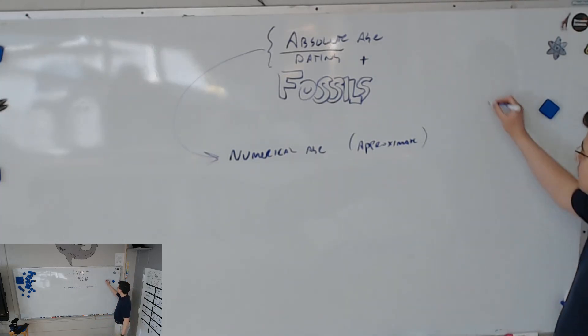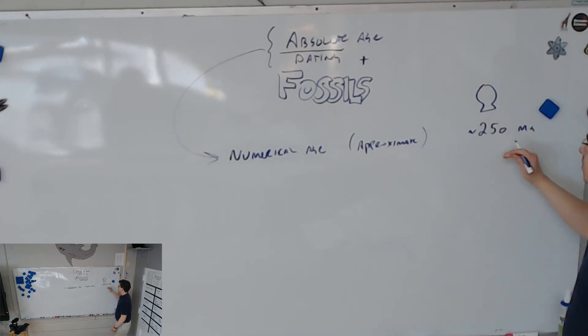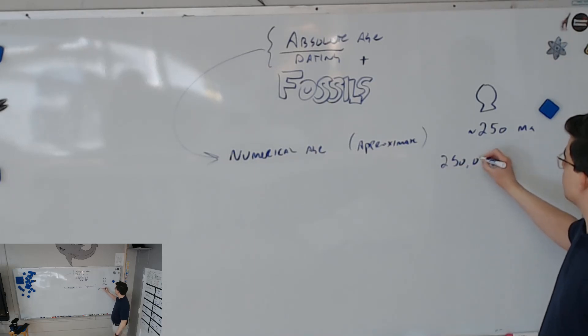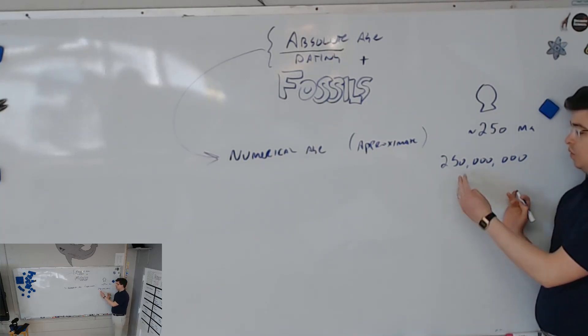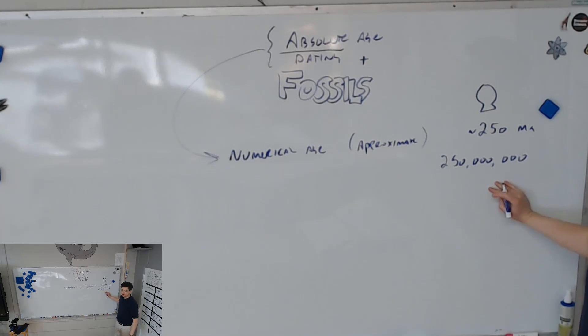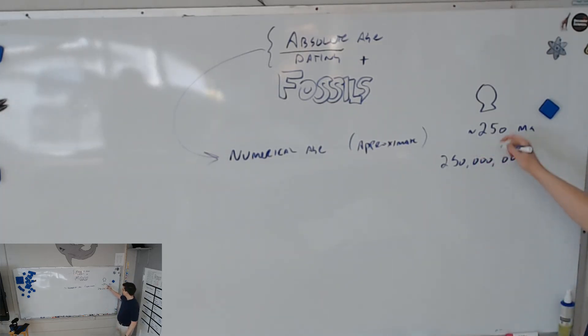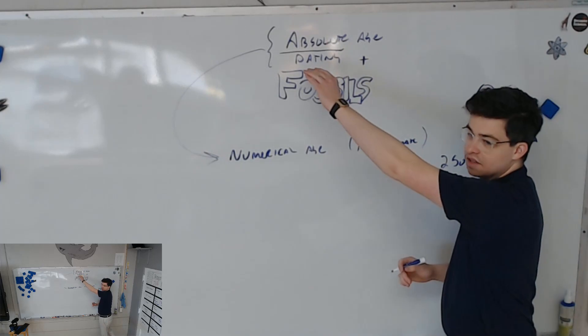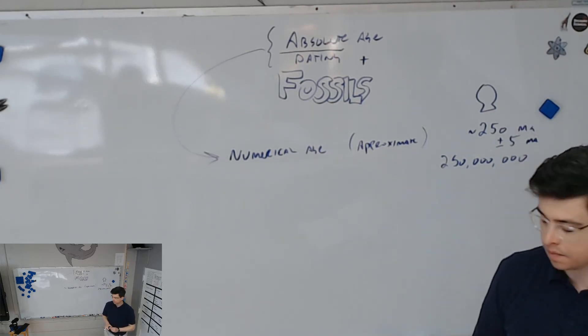It's almost always approximate. A lot of times it'll even be something like, this little seashell is about 250 mega annum. How many sig figs are here? If you remember chemistry, just two sig figs. There's a lot of numbers here, but only two of them are actually significant. So basically we're saying that within, it could change five million years. This means 250 plus or minus five mega annum.